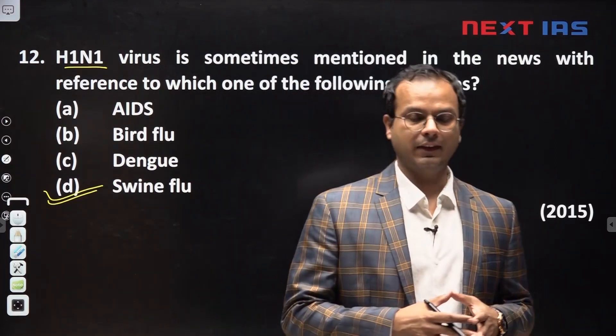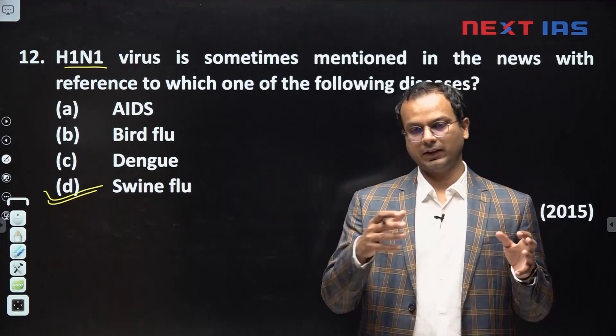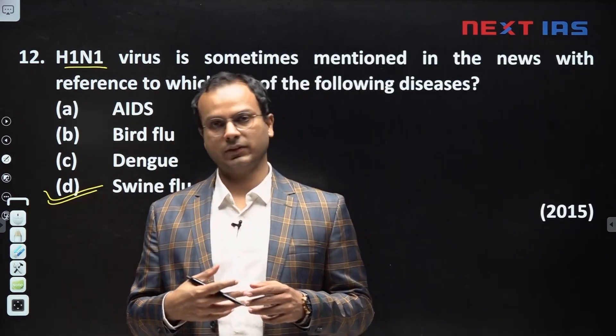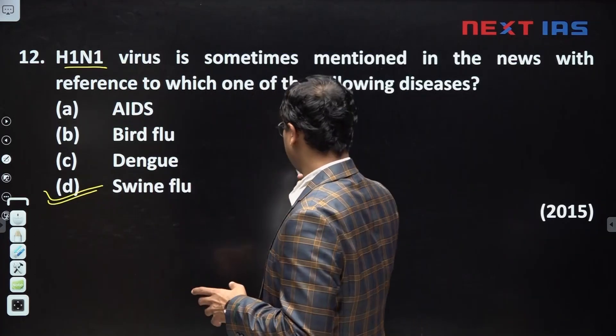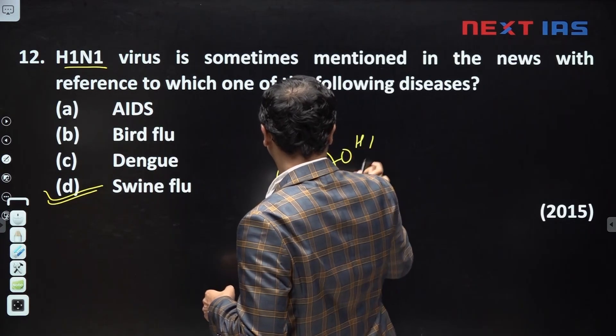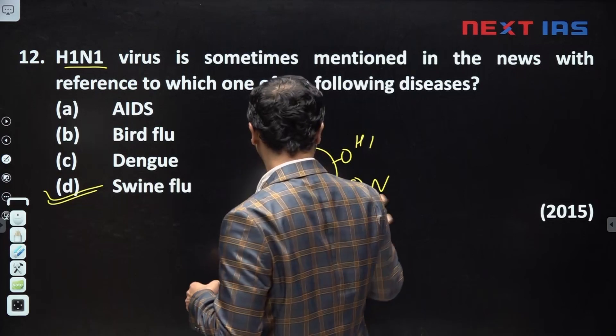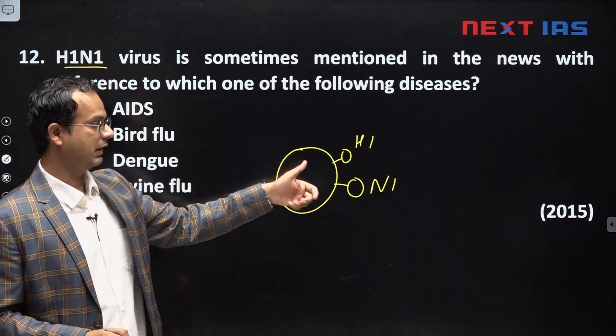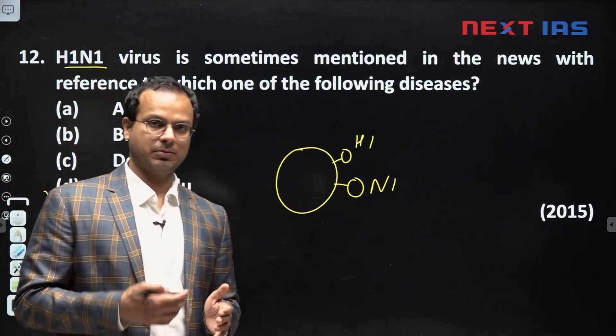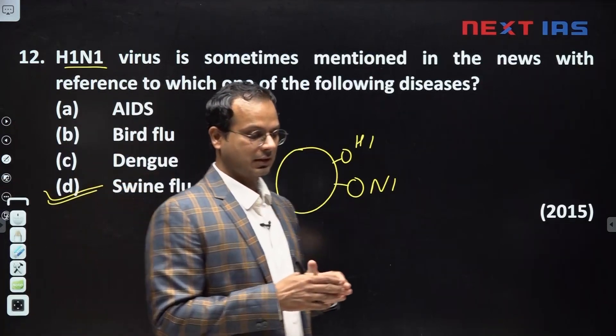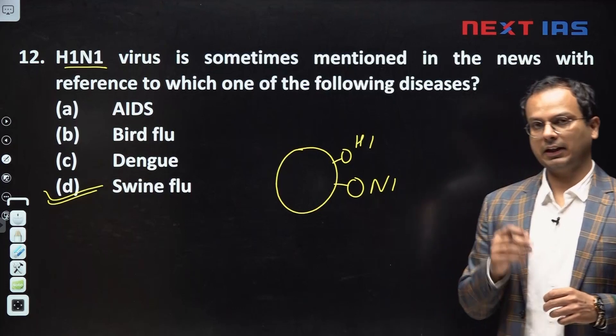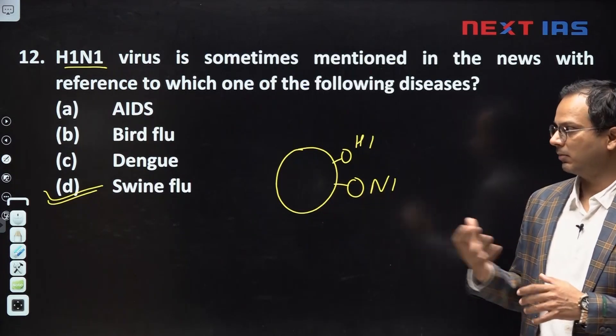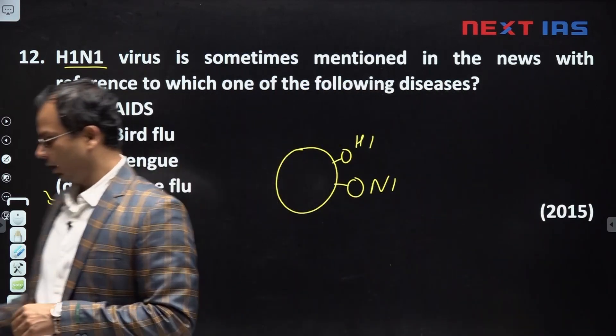All these viruses in the bird flu, swine flu etc. - these are influenza viruses. Influenza viruses are of three types - influenza A, B and C. Mostly in humans influenza A viruses are the culprits. All these bird flu, swine flu etc. they are influenza A type of virus. When we say H1N1, it means the spike protein on the surface of the virus is of H1 type and N1 type. There are many different types of H protein, there are many different types of N protein. When we say virus as H1N1, it means on the surface of the virus the spike protein is of the form of H1 and N1. When we say H5N1 then spike protein is of the form of H5 and N1. H5N1 is bird flu, H1N1 is swine flu. This is the question number 12.